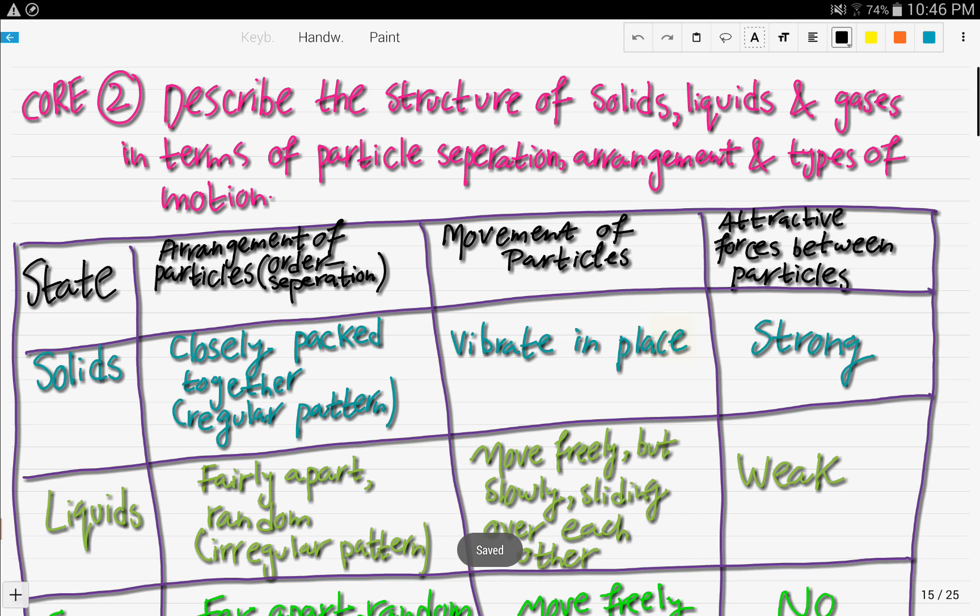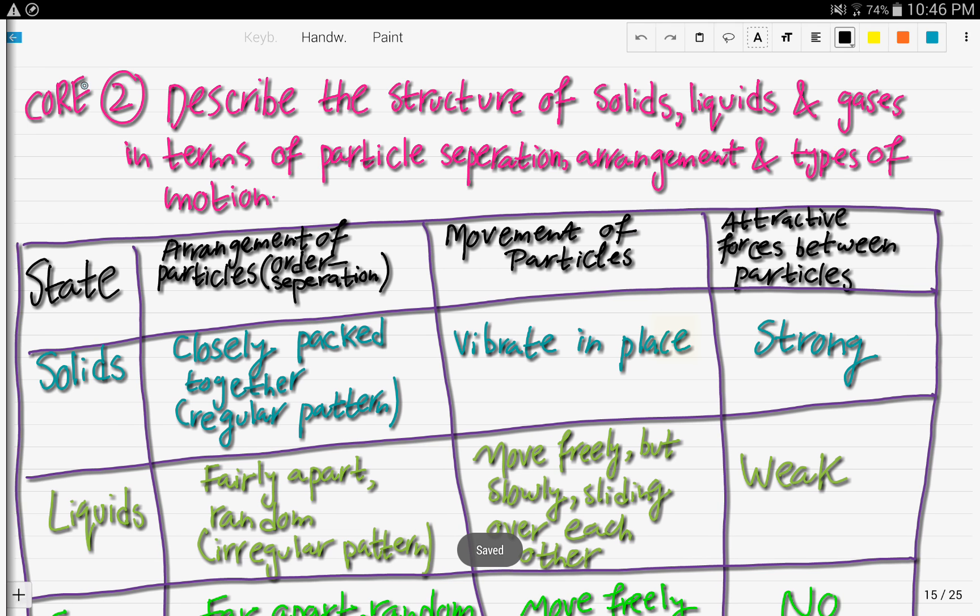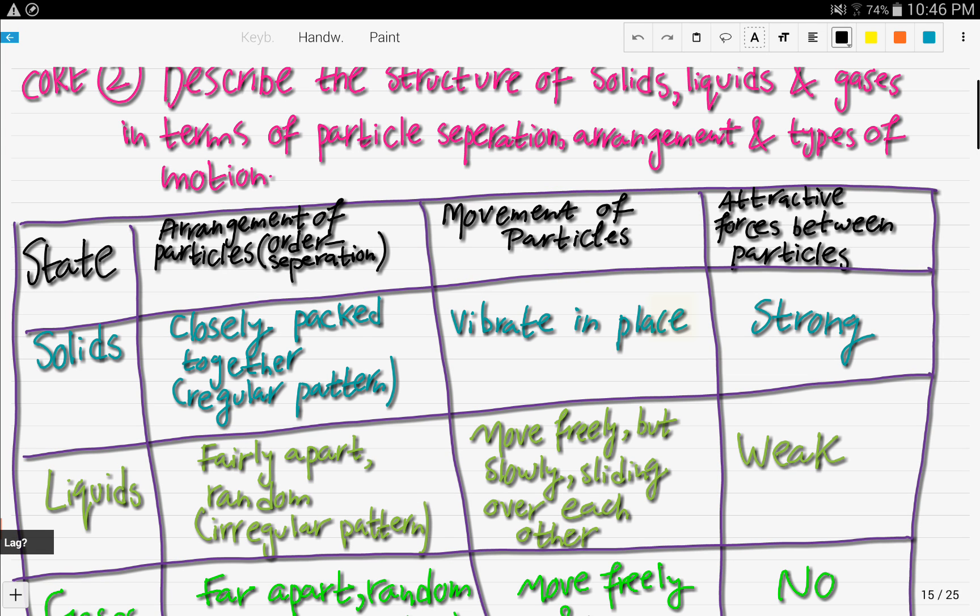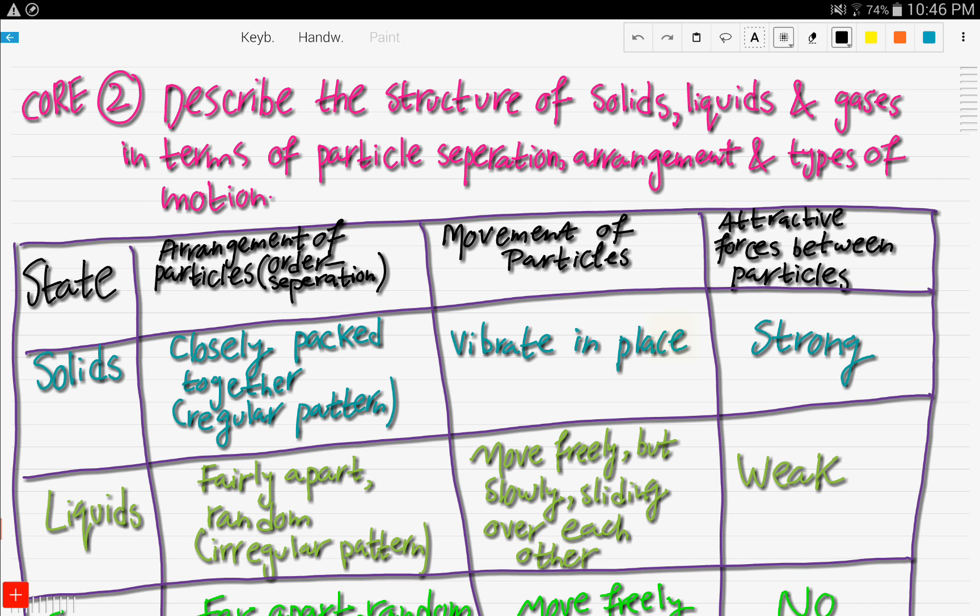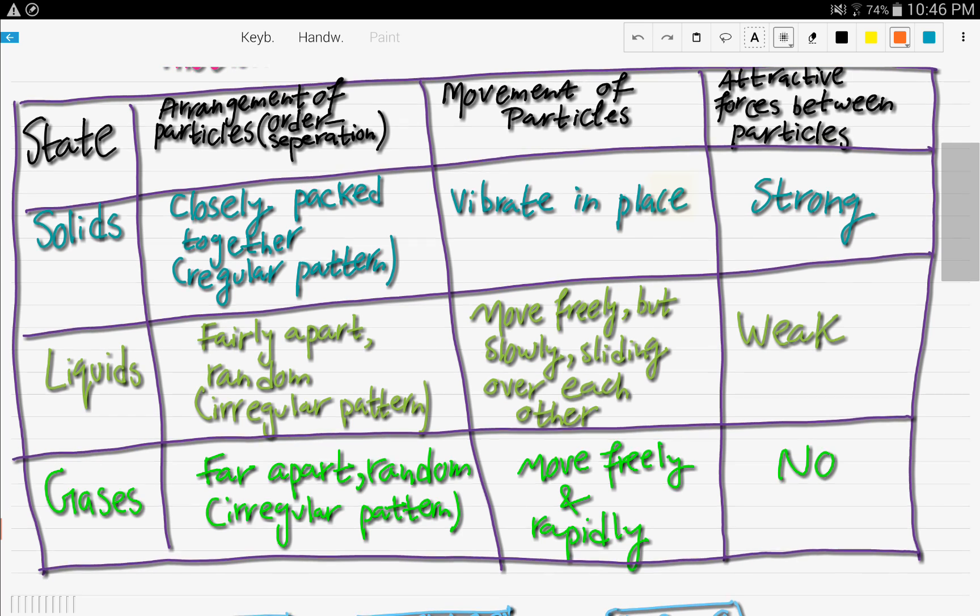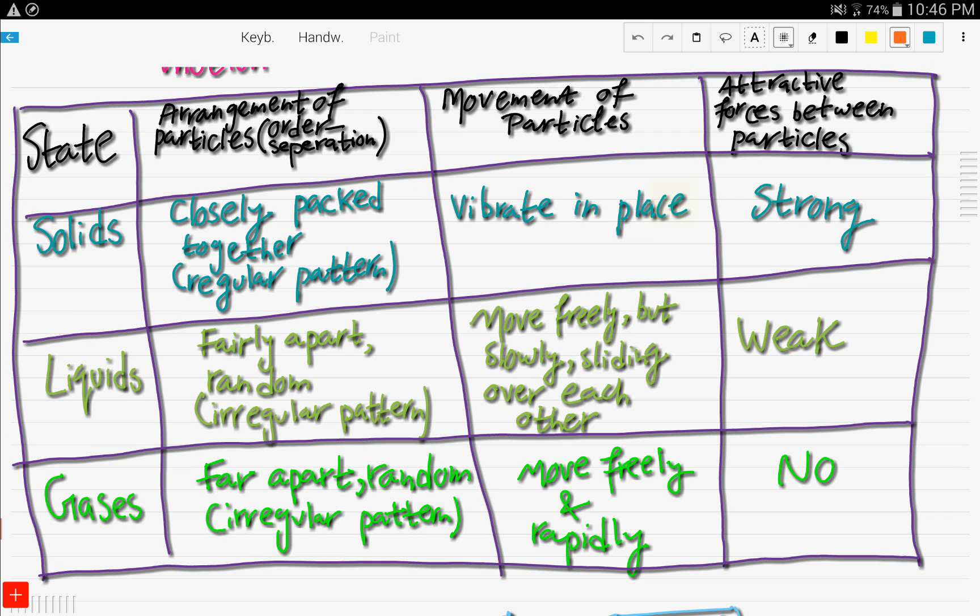The second objective, which is also core. Let me take the orange highlight this time. So describe the structure of solids, liquids and gases in terms of particle separation, arrangement, and types of motion. So here's a nice table which will make it easier to remember, make it easier for you to distinguish between the three different states: solids, liquids, and gases.